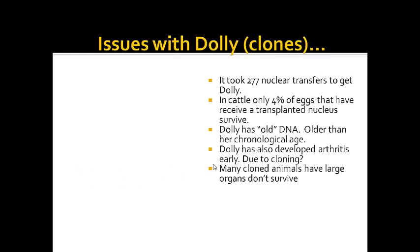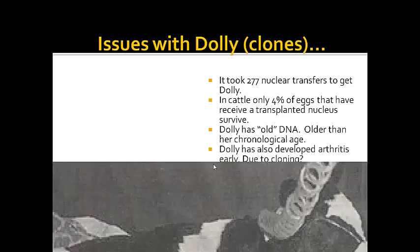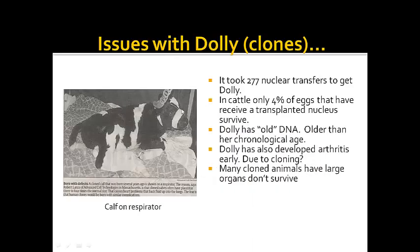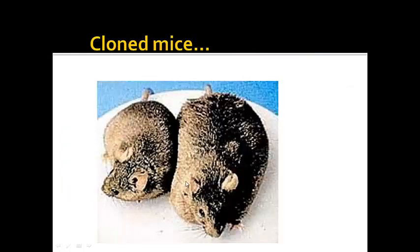Many cloned animals have large organs and don't survive. Here's a cloned calf on a respirator who did not make it because her lungs were so large. Why this occurs we don't know. Here you have an original mouse and here is the cloned mouse from it — you can see how much larger it is, and it's not healthy. Its organs are larger and they do not function as well.